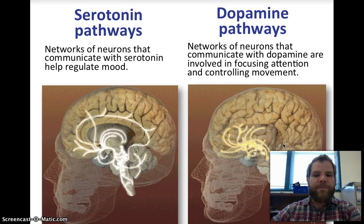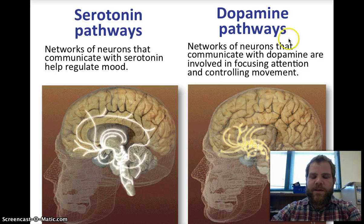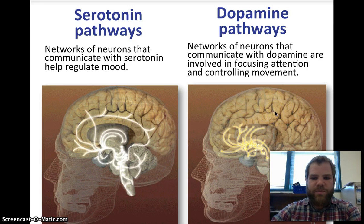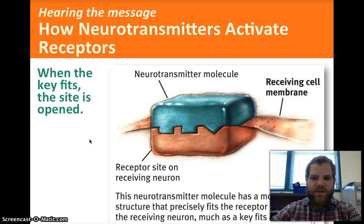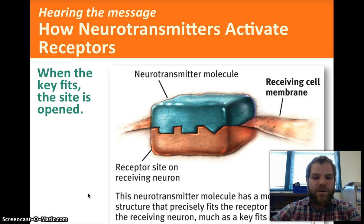We have different pathways for different neurotransmitters. Serotonin pathways are networks of neurons that communicate with serotonin to help regulate mood. Dopamine pathways communicate with dopamine and are involved in focusing attention and controlling movement. Neurotransmitters activate receptors like a lock and key — the neurotransmitter molecule has a molecular structure that precisely fits the receptor site on the receiving neuron. If it fits, the signal fires; if it doesn't fit, it cannot fire.